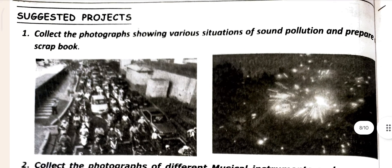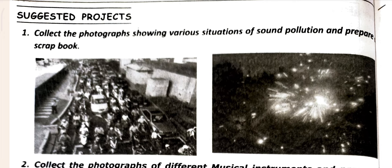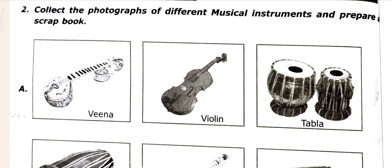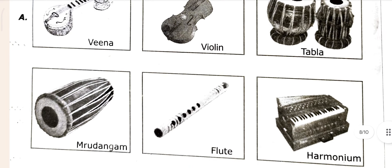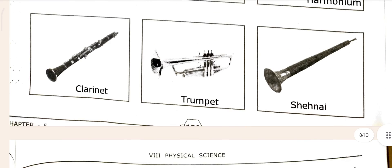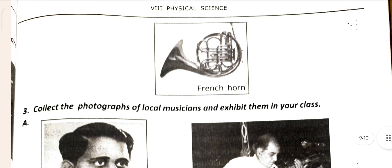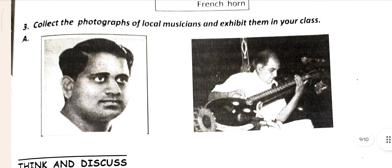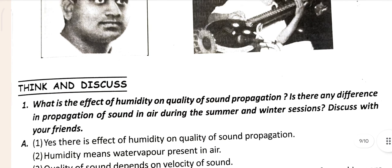See the project work. The first project work says: collect photographs showing various situations of sound pollution and prepare a scrapbook. The second project work says: collect photographs of musical instruments — such as veena, tabla, drum, harmonium, clarinet, trumpet, and French horn — and prepare a scrapbook. You can also collect photographs of accessible musical instruments from your class.